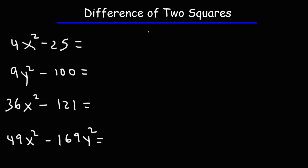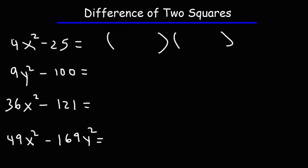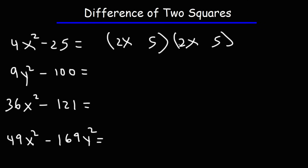Let's start with the first one: 4x squared minus 25. What is the square root of 4x squared? The square root of 4 is 2, and the square root of x squared is x. So the square root of 4x squared is going to be 2x. The square root of 25 is 5. So the answer is 2x plus 5 times 2x minus 5.